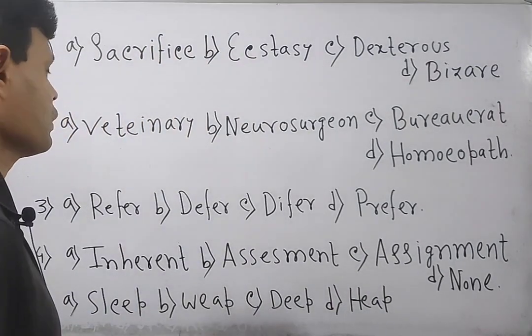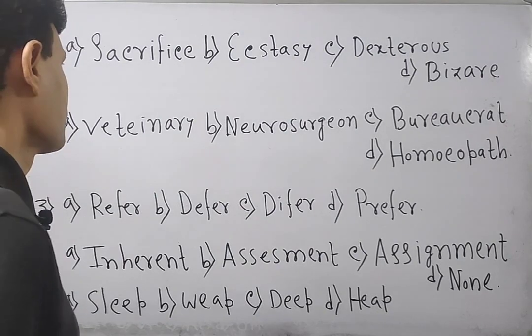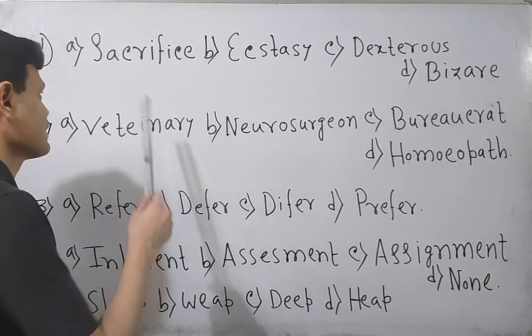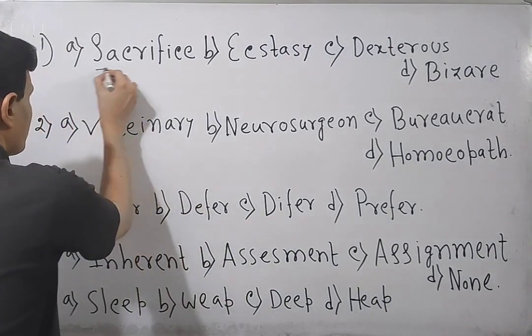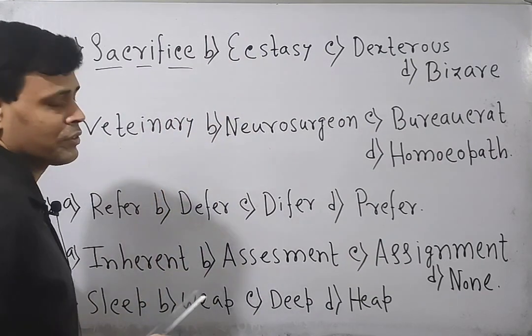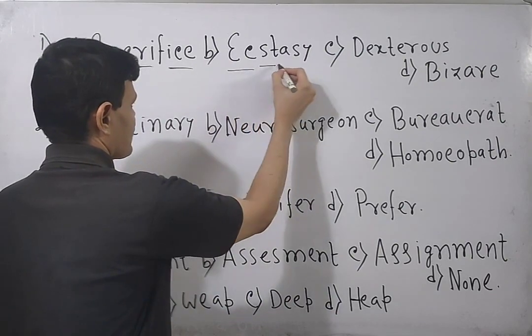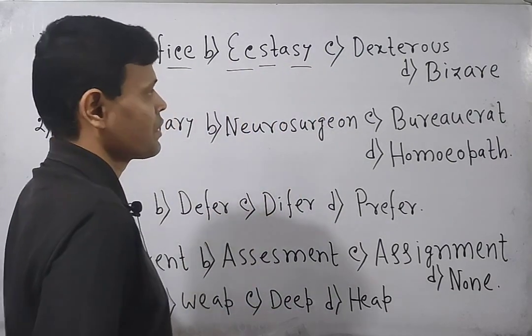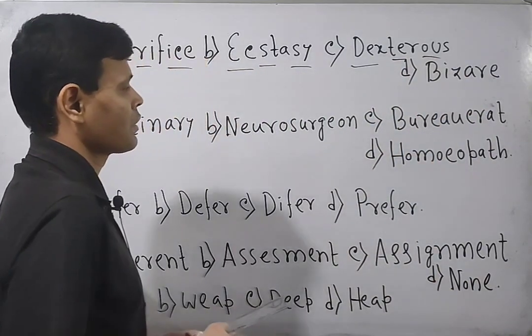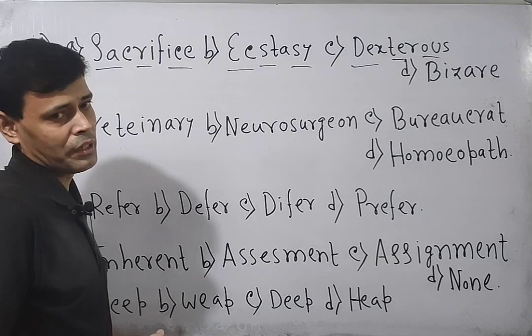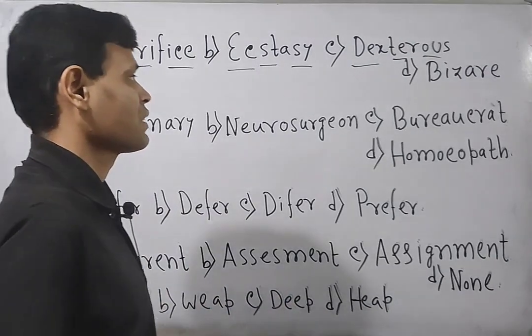Look through the first question. You need to select the incorrectly spelled word. The first word is Sacrifice, S-A-C-R-I-F-I-C-E. It has three syllables, a trisyllabic word. Ecstasy. Dexterous. On the other hand, the last spelling is Bizarre, B-I-Z-A-R-E. Out of the given options: Sacrifice, Ecstasy, Dexterous, Bizarre.